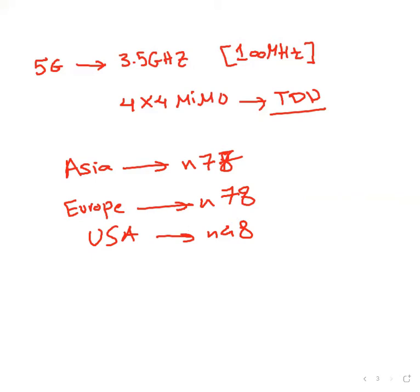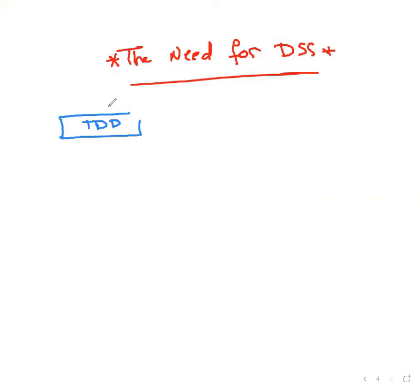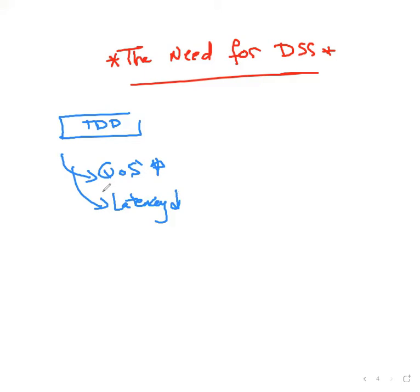Now, why do we need DSS — dynamic spectrum sharing? Not all service providers own spectrum licenses with TDD bands. Not all MNOs have these spectrum licenses to take advantage of 5G's optimized quality of service with low latency and support for many use cases like automotive networks and industrial networks. Operators must also make a transition to standalone — meaning 5G RAN connected to a 5G core.